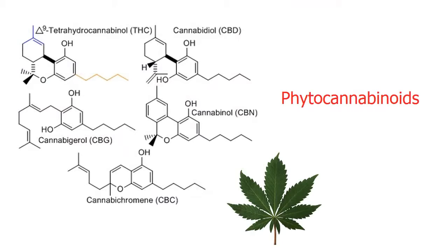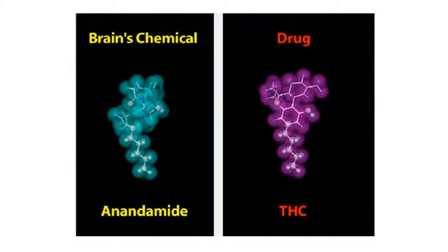We've talked so far about endocannabinoids, the ones our bodies produce. One of the other classes are the phytocannabinoids, the cannabinoids found in plants, or more specifically in cannabis. THC and CBD are phytocannabinoids, and combined they represent the two most abundant substances. These substances, when ingested, interact with our cannabinoid receptors more strongly, regardless of whether they are smoked, eaten, or vaporized. The action of phytocannabinoids is to alter dramatically the balance of the endocannabinoid system.